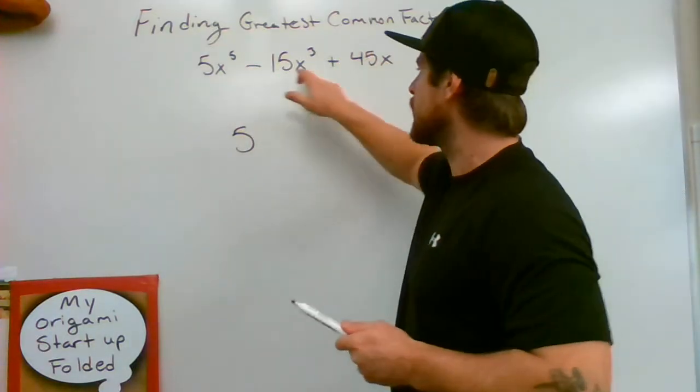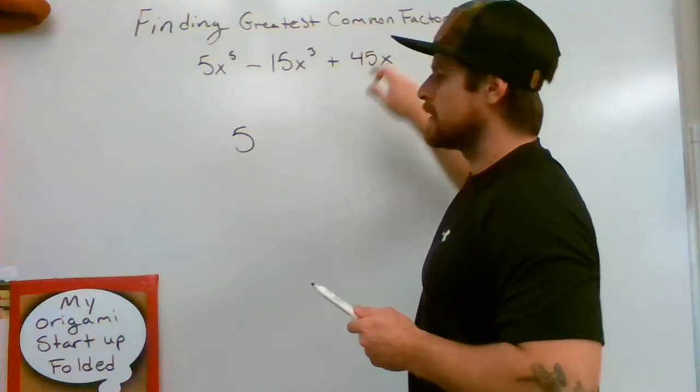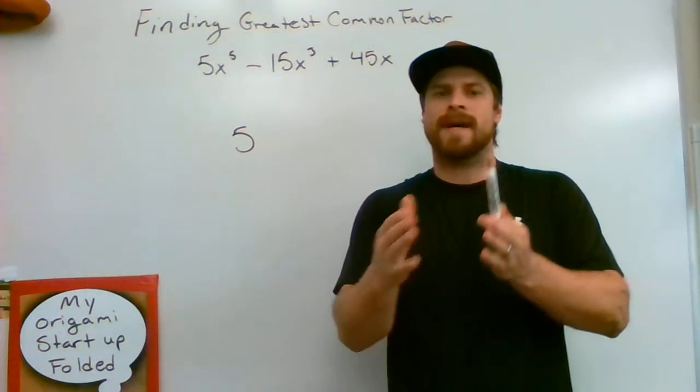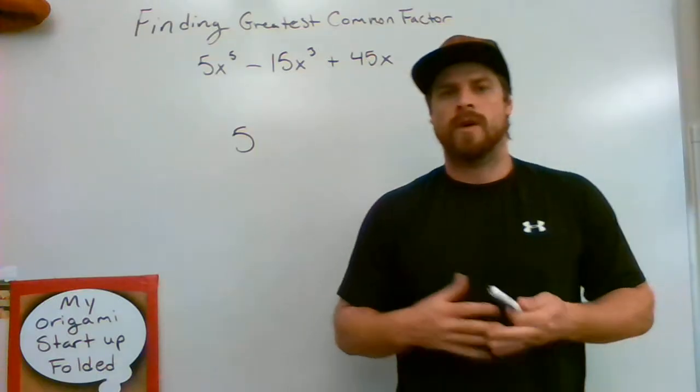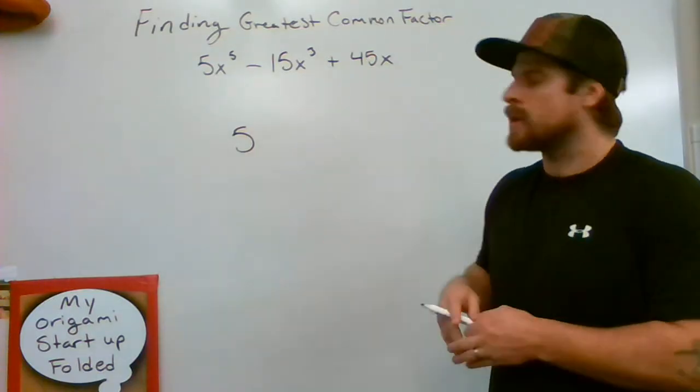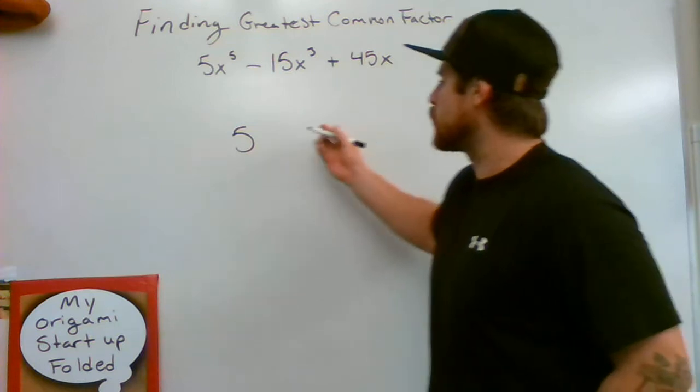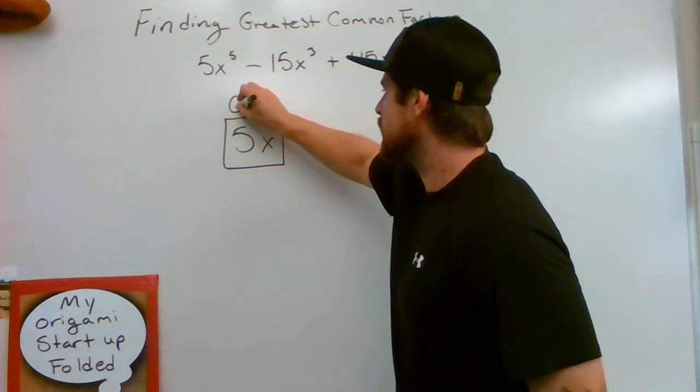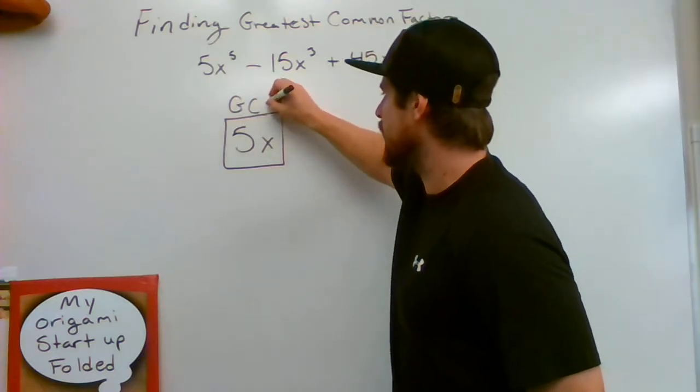Now, I have x to the 5th, x to the 3rd, and x. So what I need to do here is say, what is my lowest exponent? If they're all x's, the greatest common factor that I have is just one single x. So my answer to this, my GCF, my greatest common factor, is going to be 5x.